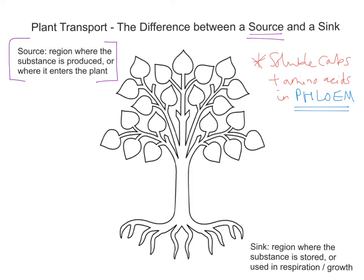So we're going to shade in one particular leaf here — this green leaf — and we're going to imagine that in this leaf we have produced some glucose and sucrose. That leaf is classed as a source, so we'll label that with an S. Another source could be the root hair, because nitrates enter the plant by absorption into the root hairs. And by definition, the source isn't just the region where it's produced, but where a substance can enter the plant.